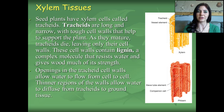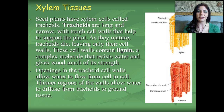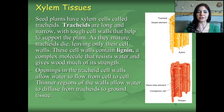Seed plants have xylem cells called tracheids. Tracheids are very long and narrow with tough cell walls that help to support the plant. Cell walls are made out of a polysaccharide called cellulose. As they mature, the tracheids actually die and leave their cell walls. The cell walls contain a substance called lignin — a complex molecule that resists water and gives wood much of its strength. That's what gives trees that hard bark. Openings in the tracheid cell walls allow water to flow from cell to cell, and thinner regions allow water to diffuse to the ground tissue.